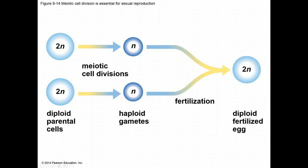While meiosis produces haploid cells, the diploid number for the organism is restored when the sperm and egg come together during fertilization. Now we will spend some time talking about fertilization and meiosis.